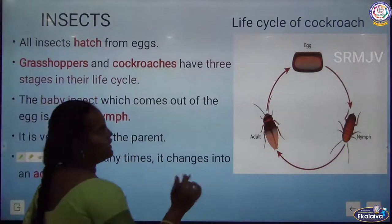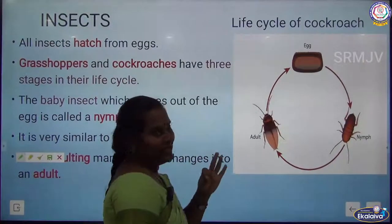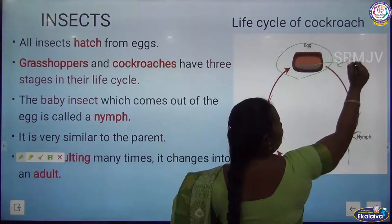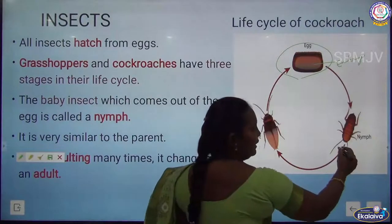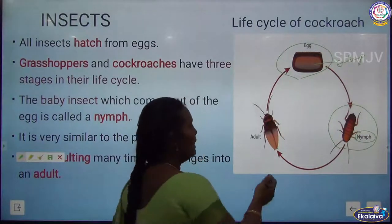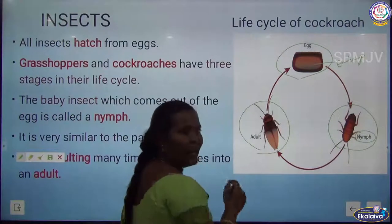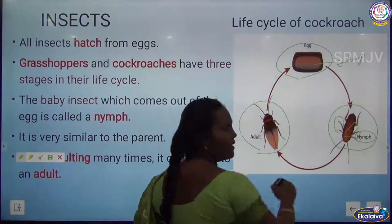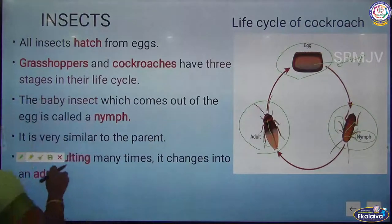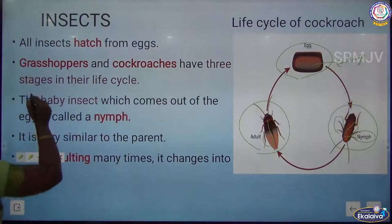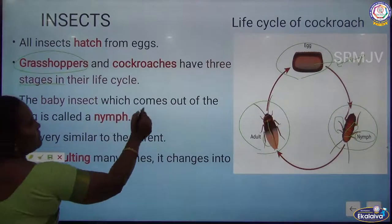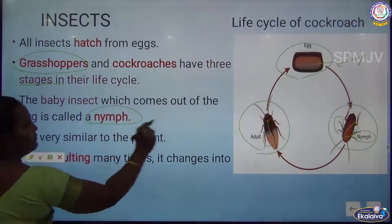The life cycle of a cockroach has three stages: egg, nymph, and adult. The embryo converts into the young one — in cockroaches the young one is called a nymph. The nymph does not have wings; only after growing does it get wings. Grasshoppers also have three stages in their life cycle. Baby insects that come out of the egg are called nymphs.